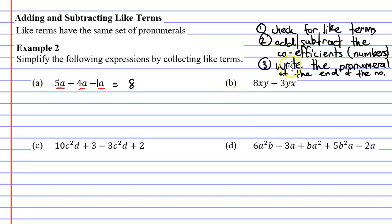And then the third step says write the pronumeral at the end of the number. So the pronumeral we were looking at was a. So we're going to write that at the end of our number. That's our solution 8a. Now to look at this in a more visual way, what you could do is imagine these were apples. If I had five apples and I added four apples to this I would have nine apples. And then if I took away one apple I would end up with eight apples.